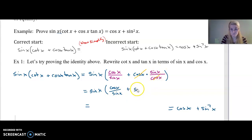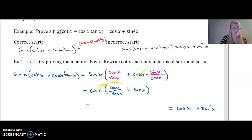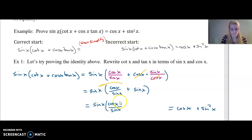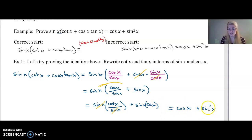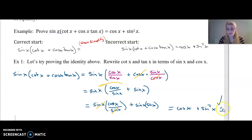Plus cosine of x times sine of x over cosine of x. If I distribute, that expression is then equivalent to — I'm going to write an extra step — cosine of x plus sine of x times sine of x. Lo and behold, the sine of x cancels out, and what I'm left with is cosine of x plus sine squared of x. So I proved that the left side equals the right side. Proved it, done.